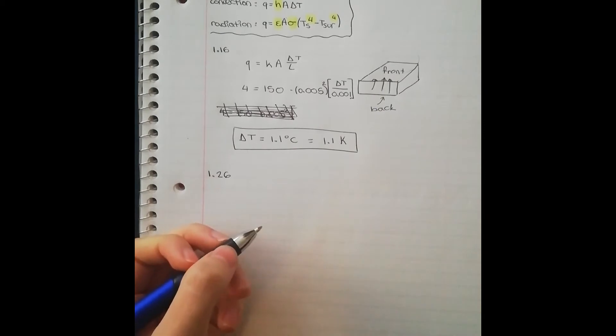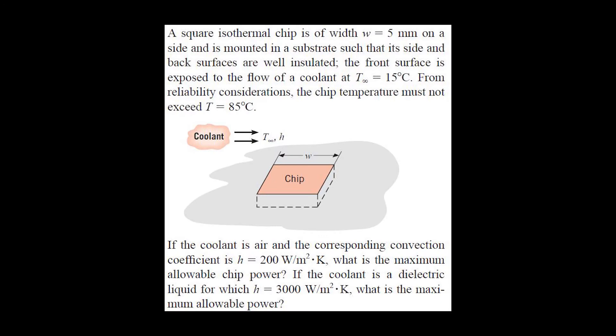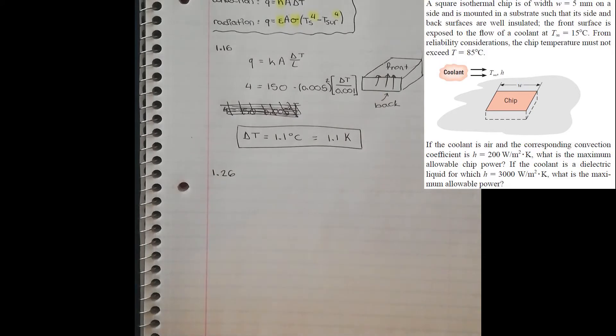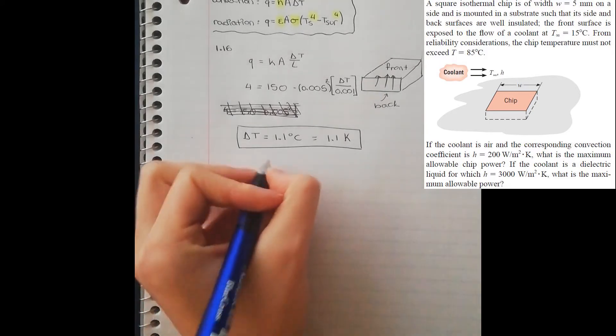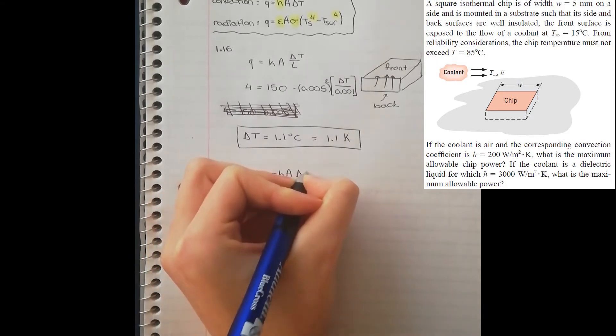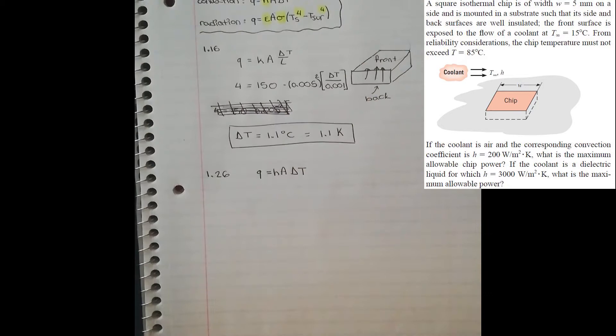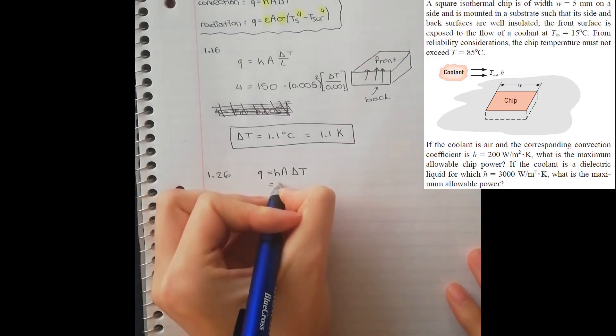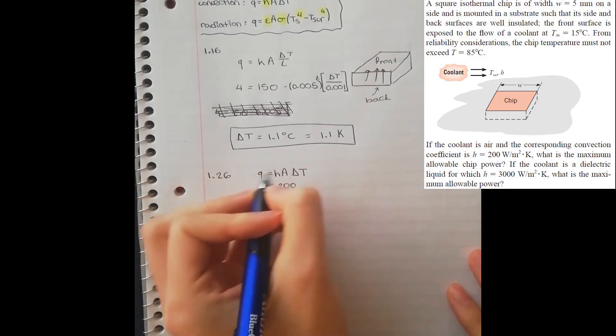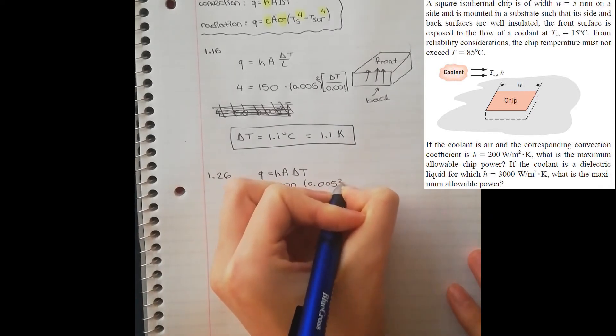Now take a look at this next problem, which is quite similar to the last one. Since the problem talks about convection coefficient, our guiding equation is Q is equal to HA delta T. This time, we are looking for Q. We know that H is equal to 200, and the area is once again 0.005 squared.